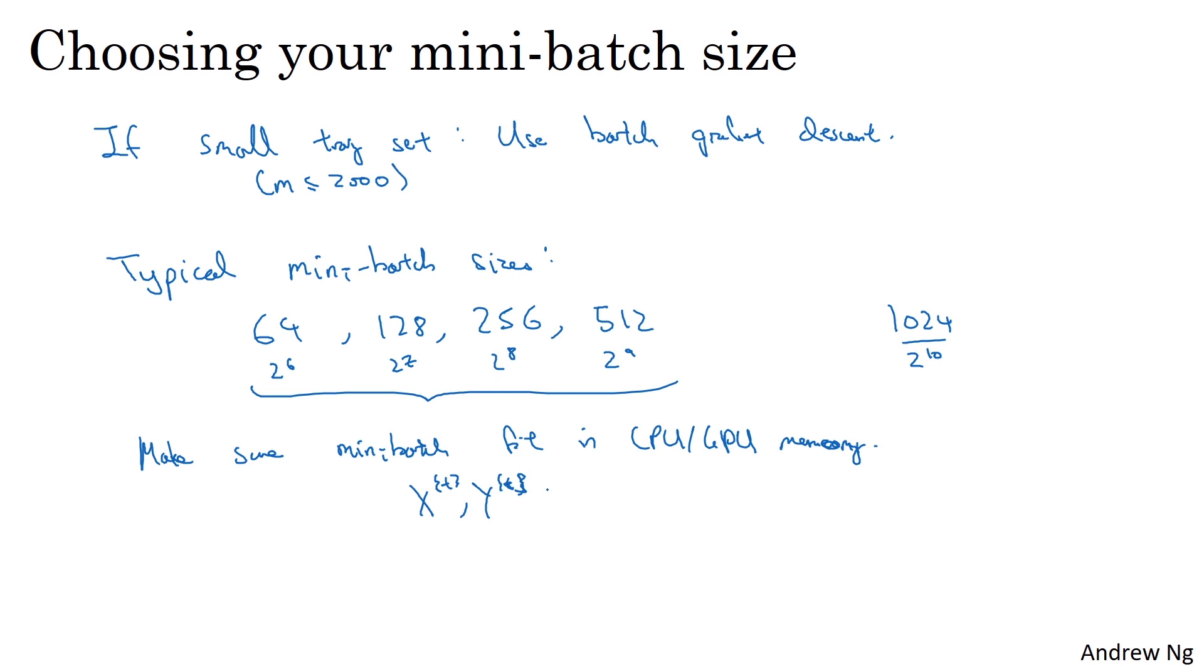So I hope this gives you a sense of the typical range of mini-batch sizes that people use. In practice, of course, the mini-batch size is actually another hyperparameter that you might do a quick search over to try to figure out which one is most efficient at reducing your cost function J. So what I would do is just try several different values, try a few different powers of two, and see if you could pick one that makes your gradient descent optimization algorithm as efficient as possible. But hopefully this gives you a set of guidelines for how to get started with that hyperparameter search.